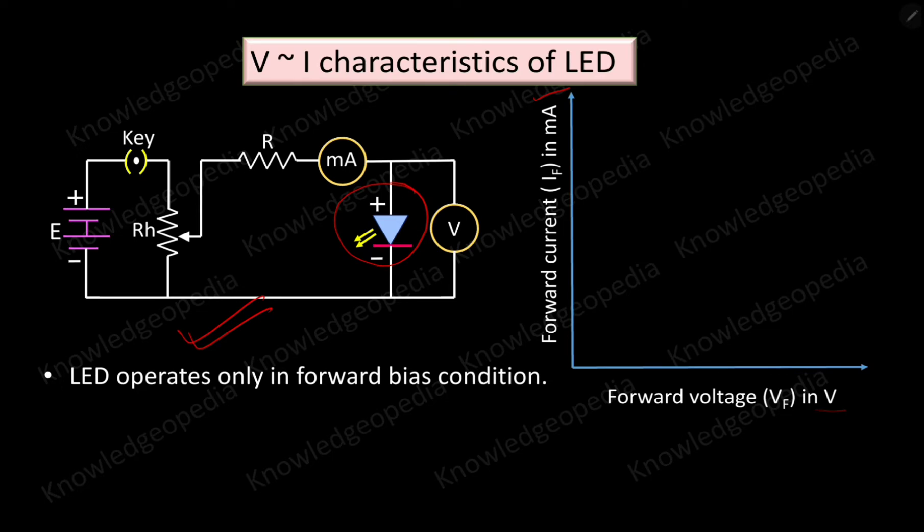Now, as the function of LED is same as that of a normal p-n junction diode, the V-I characteristic trend is also same as that of a p-n junction diode. This is the trend of V-I characteristics for a given LED. Here you can see the current is initially zero and it starts increasing after a certain value of applied voltage, and after that it increases exponentially.